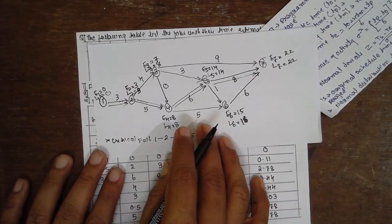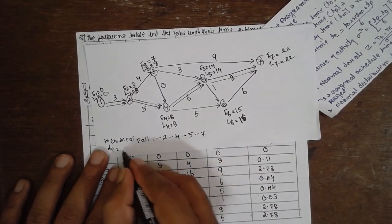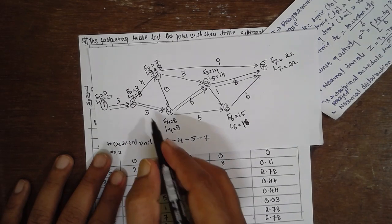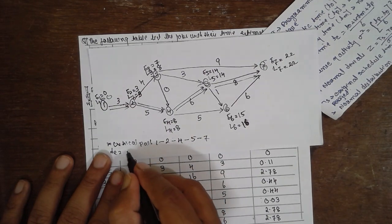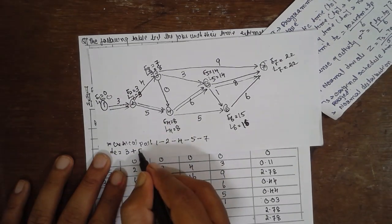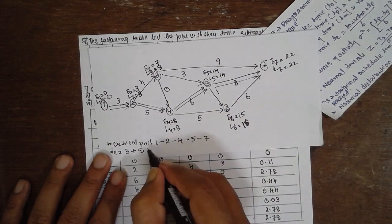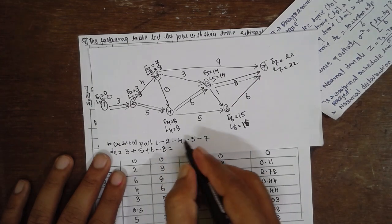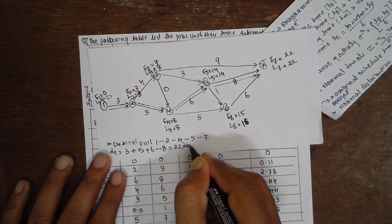We have to find out TE value. TE value. TE equals here 1-2 is 3, 3-5. 2 to 4 is 5. 4 to 6 is 5 is 6. 5 to 7 is 8. If you calculate, it will be 22 days. 22 days.